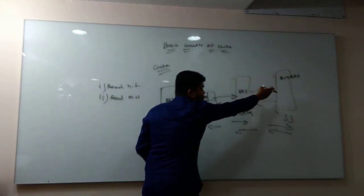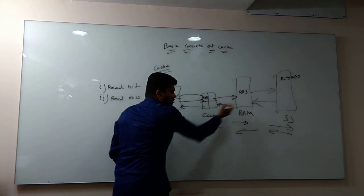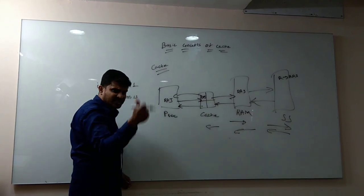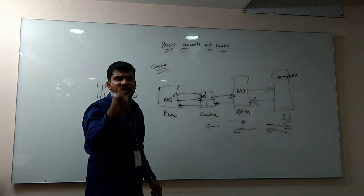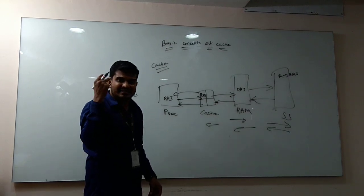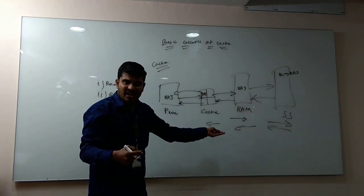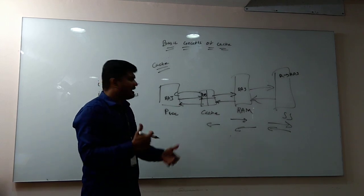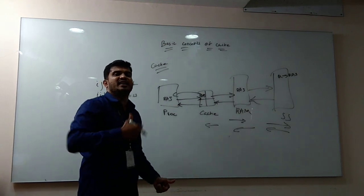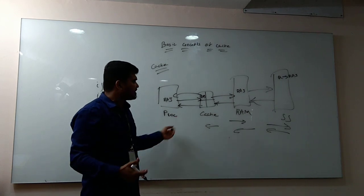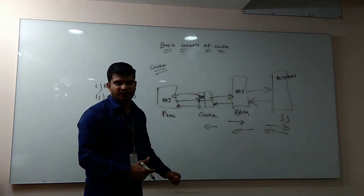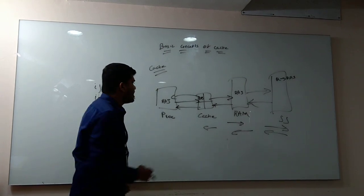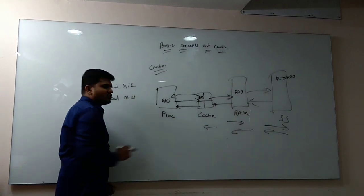So the processor will not go all the way to secondary storage or RAM — it will directly get it from the cache. The first point is always a miss, but the second time, if the data is available when the processor is searching, it will be a hit. The first time it is always a miss; a hit will occur when the data is already residing in the cache.